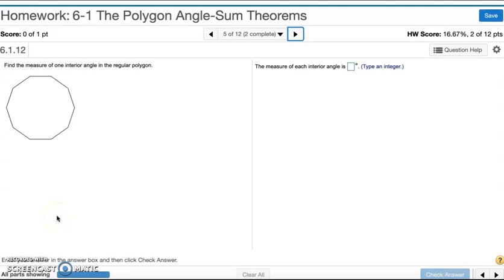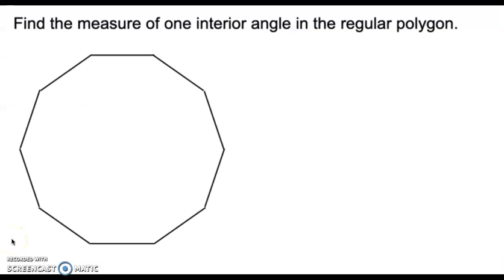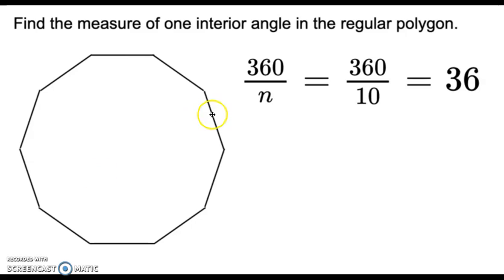Number five: find the measure of one interior angle in the regular polygon. A regular polygon means that all the sides and all the interior angles are equal to each other. To find the measure of one interior angle, we first need to find the measure of one exterior angle by dividing 360 by the number of sides. There are 10 sides, so 360 divided by 10 is 36.